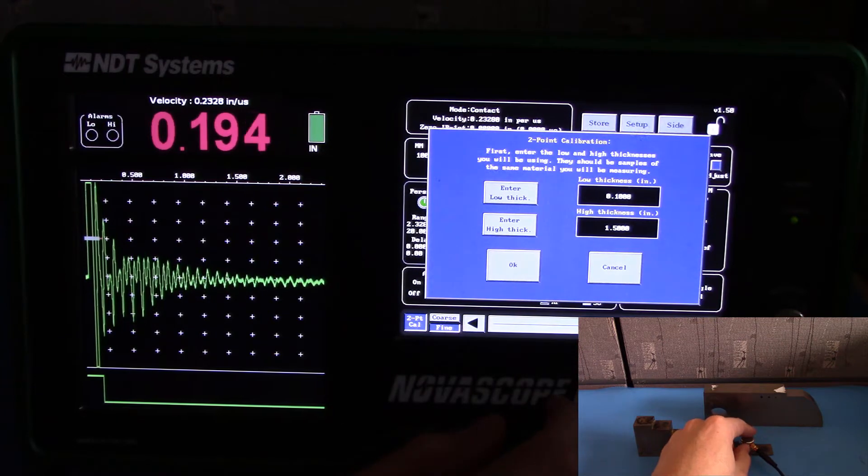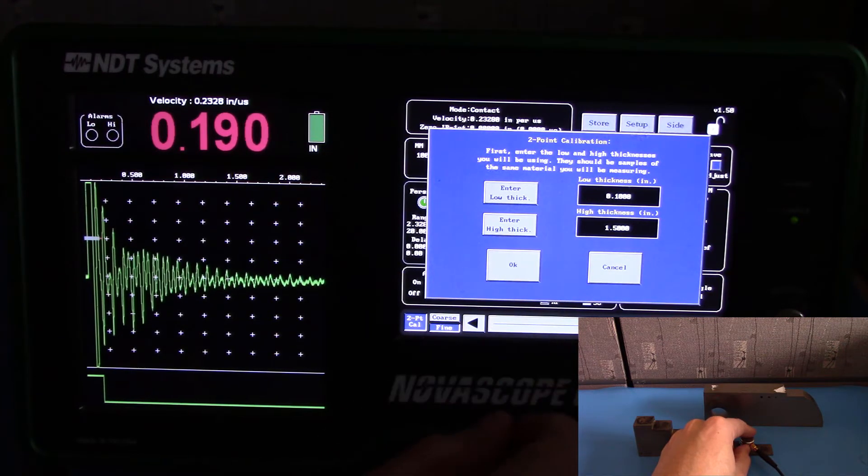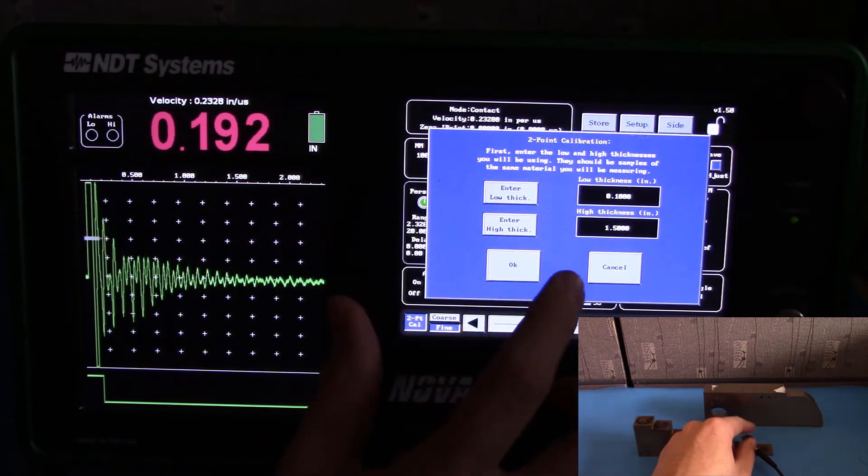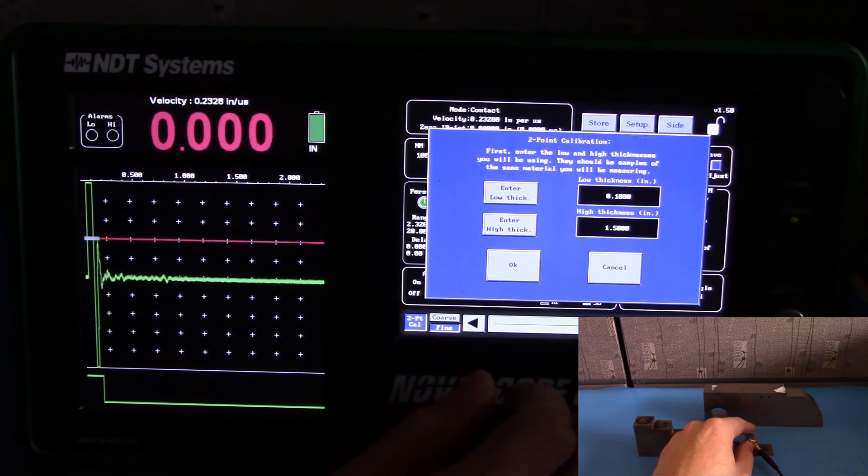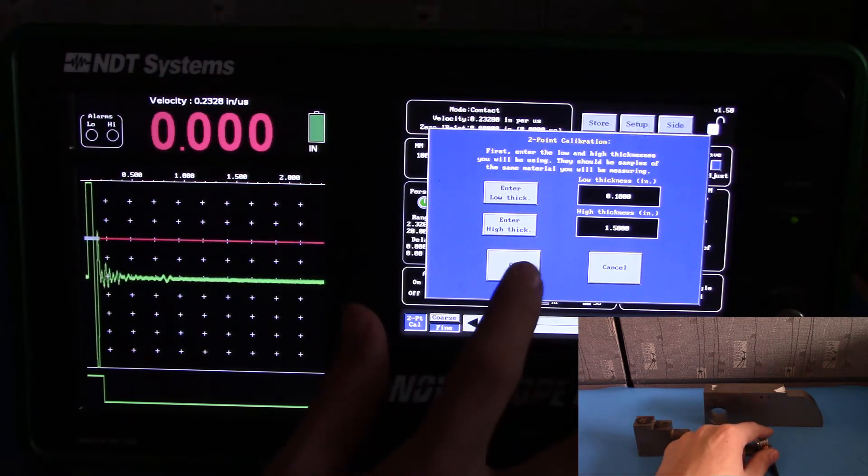Select your low thickness for the step wedge. In this case, 0.1 inches. And our high thickness is 1.5 inches. Go ahead and hit OK.